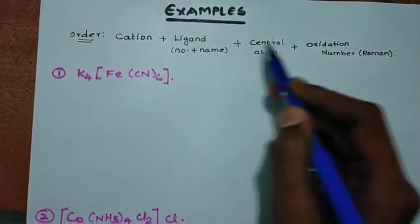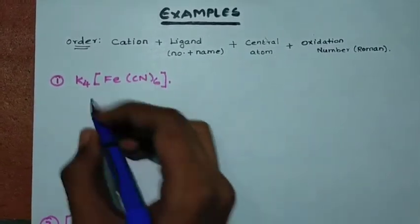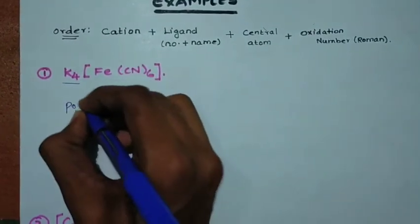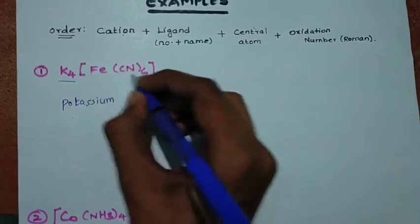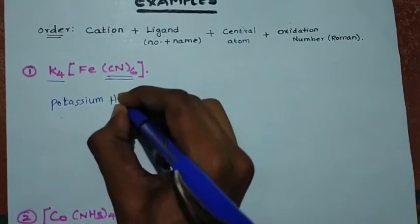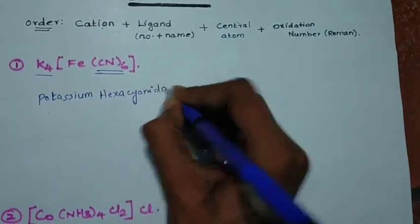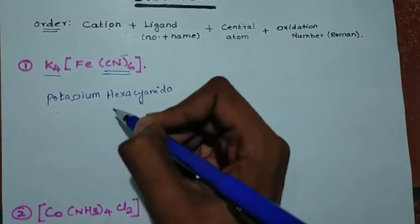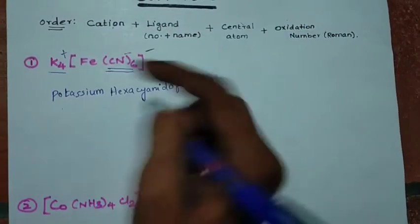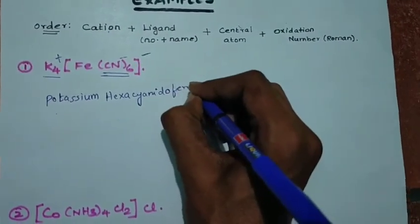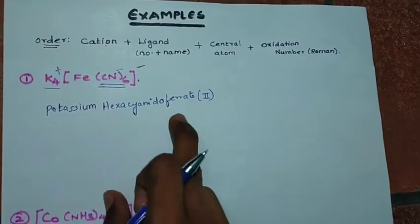So the order for writing the name is: cation first, then number of ligands (hexa), then name of ligand (cyanido), then central metal using its Latin name if the complex is anionic (ferrate), then oxidation state in Roman numerals (II). The final answer is potassium hexacyanidoferrate(II).